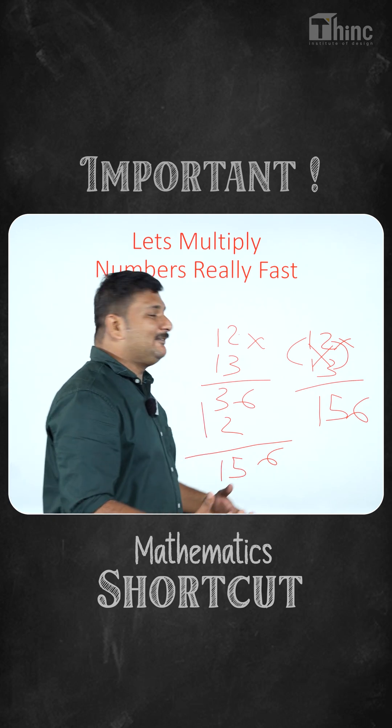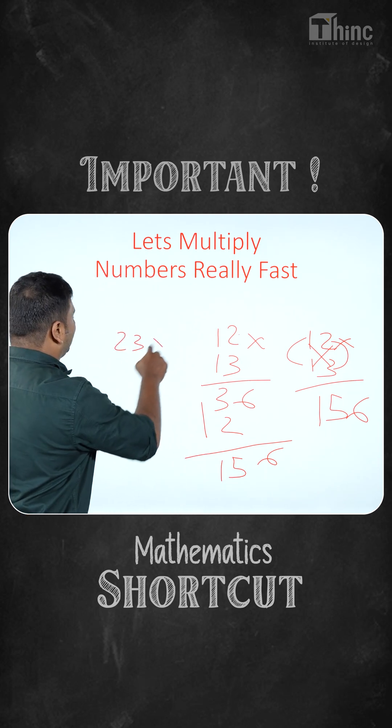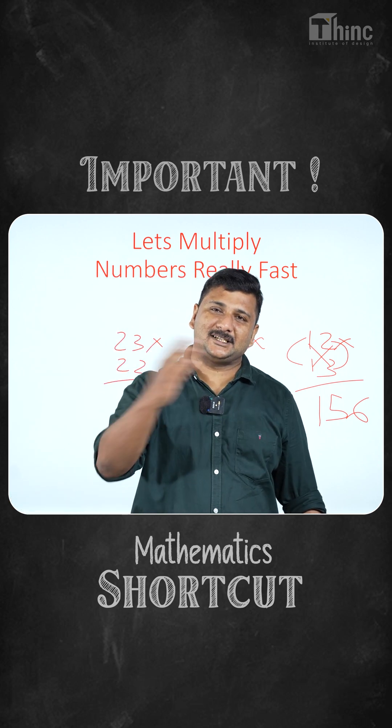So you might be thinking what will we get, what if we get a two digit number? So let's do 23 x 22. So whenever you are getting a two digit number carry over the first digit to the left.